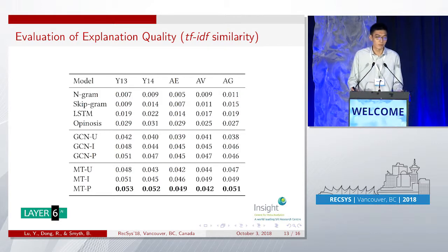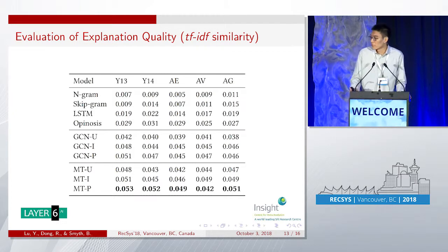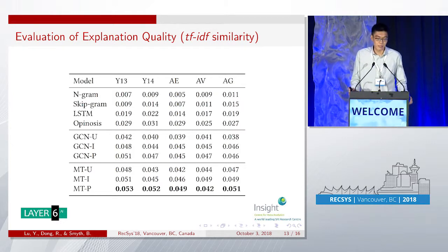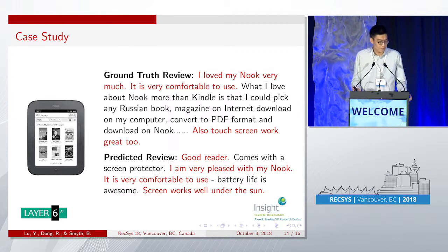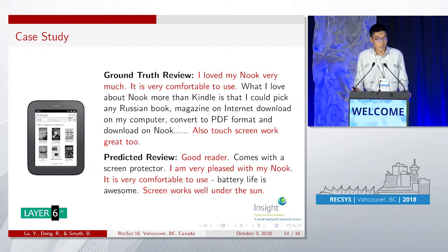A perceived weakness of this work is that instead of performing a live user trial for evaluating explanation quality, we only evaluate using perplexity and TF-IDF similarity. To further validate performance, we conduct a case study of the generated explanation. Our model recommends an e-book reader to the user and provides a possible review as explanation. The predicted review has great overlap with the ground truth, and the model discovered important factors mentioned in the ground truth — for example, comfort, the screen, and the overall positive sentiment.